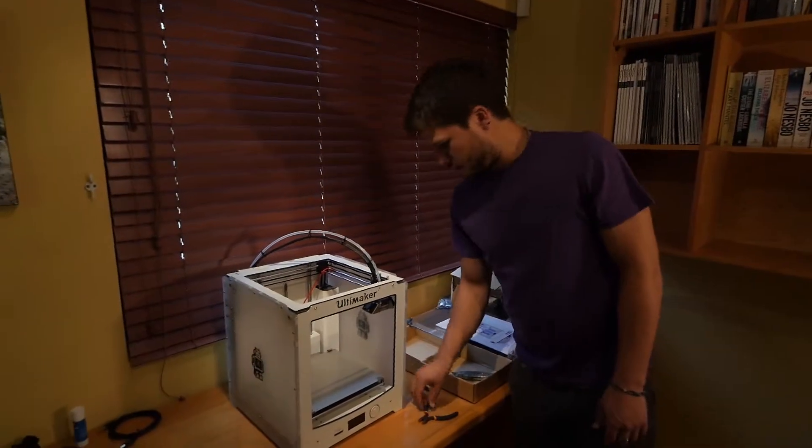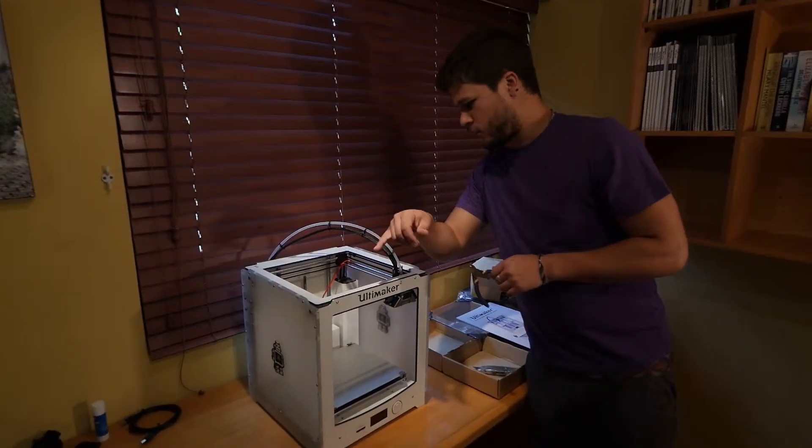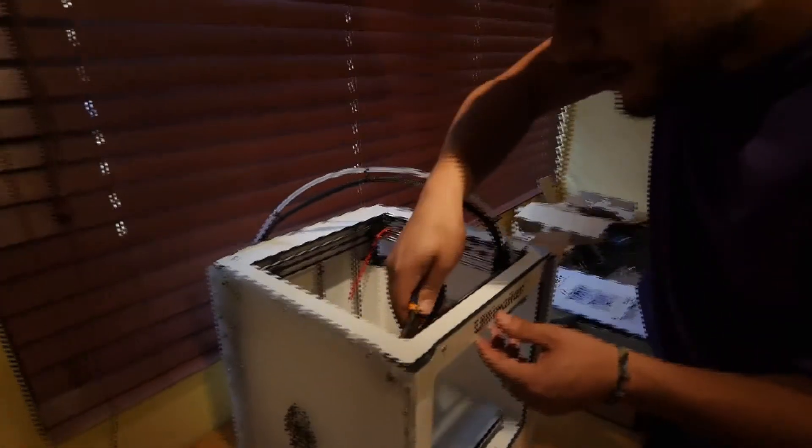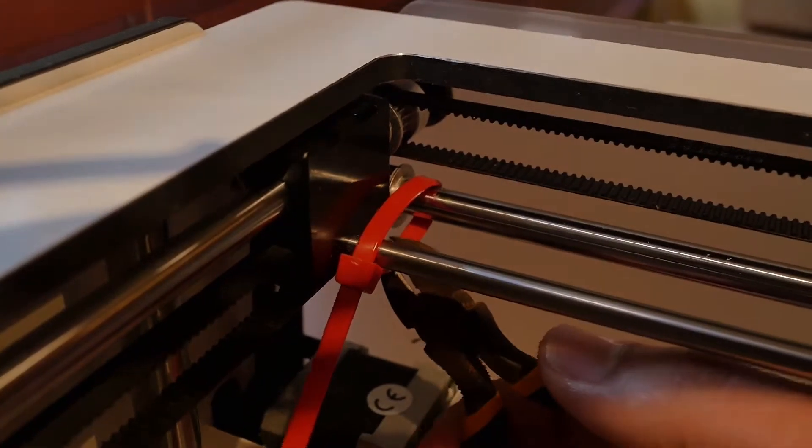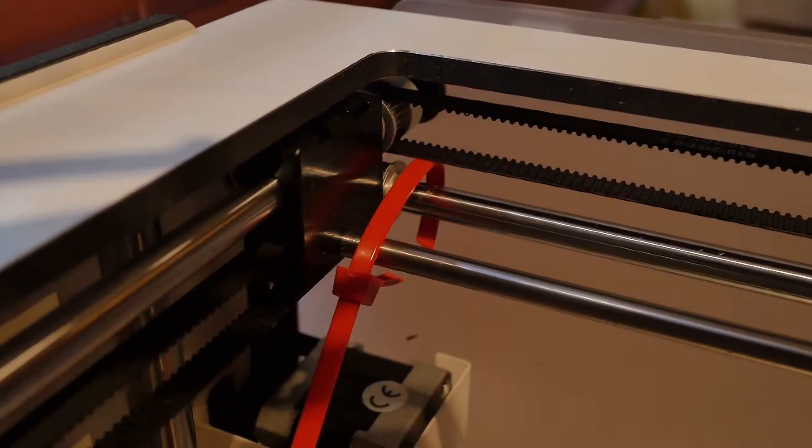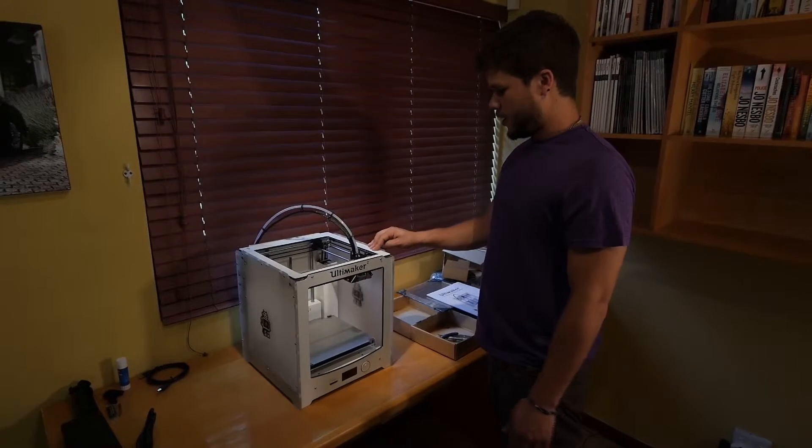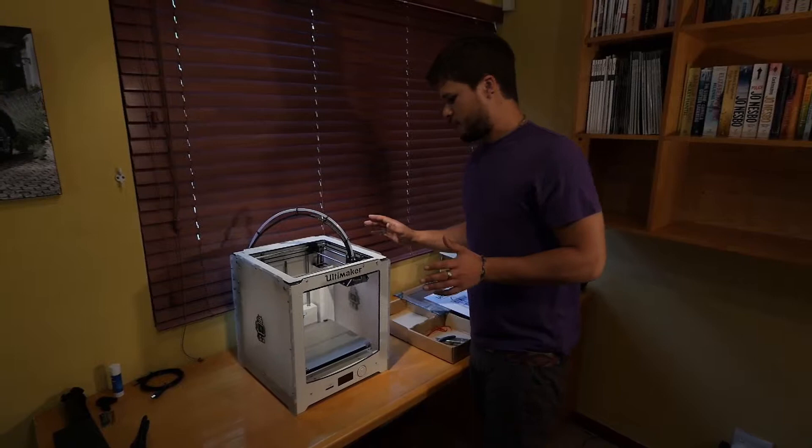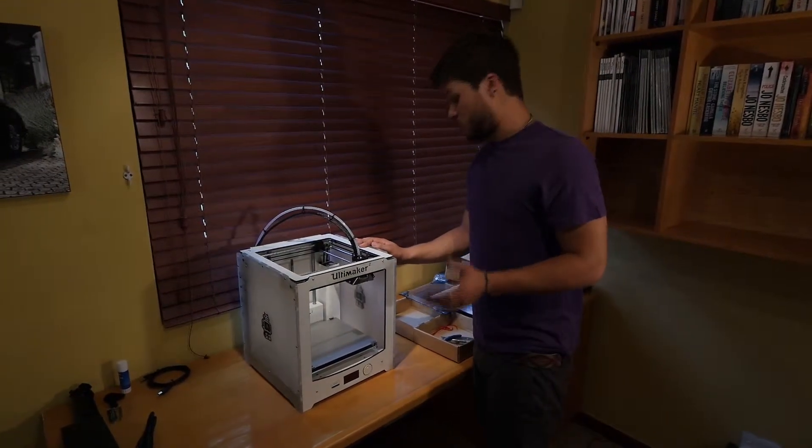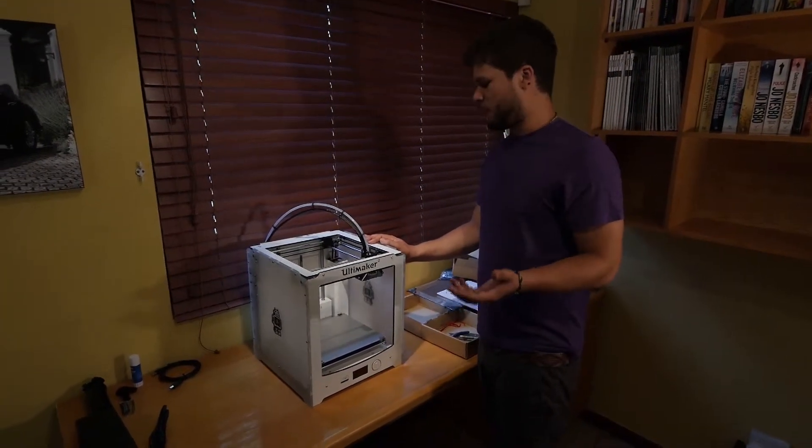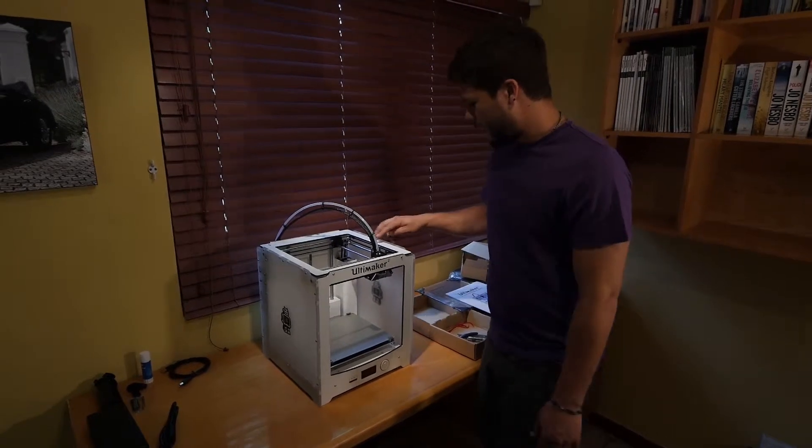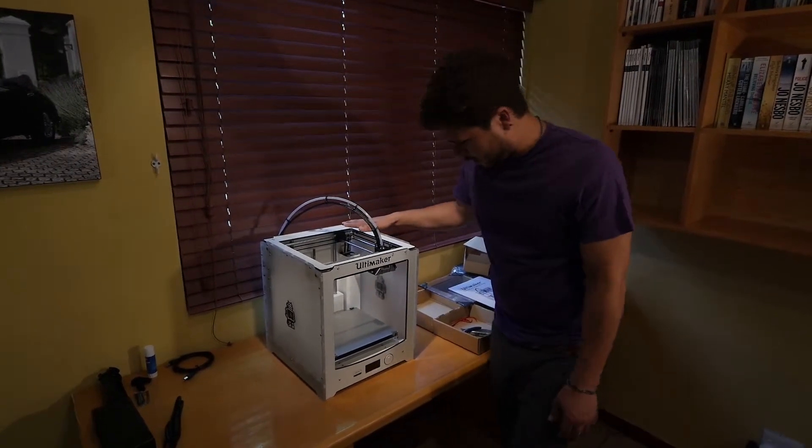So now what we need to do is just grab a set of side cutters here. Just to get the two zip ties that hold the X and Y axis together here. So it looks like our Ultimaker is fully unboxed. And it looks like everything came and shipped really nicely. And also really quickly. It took about five days or so all the way from the Netherlands down here to South Africa Cape Town.